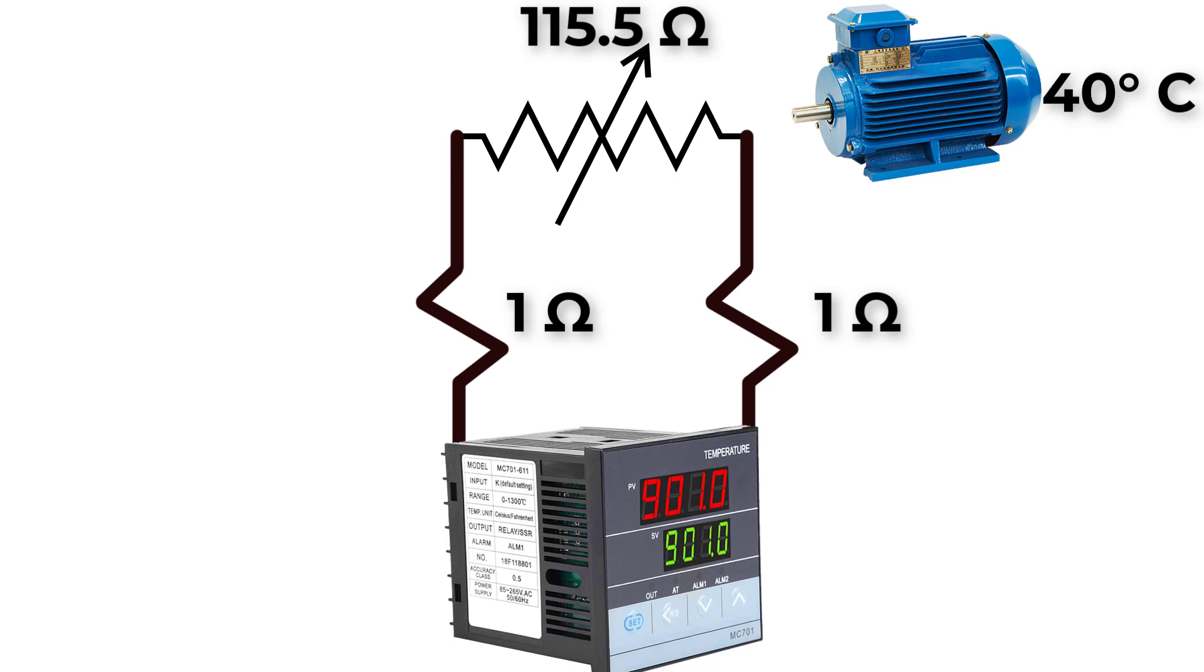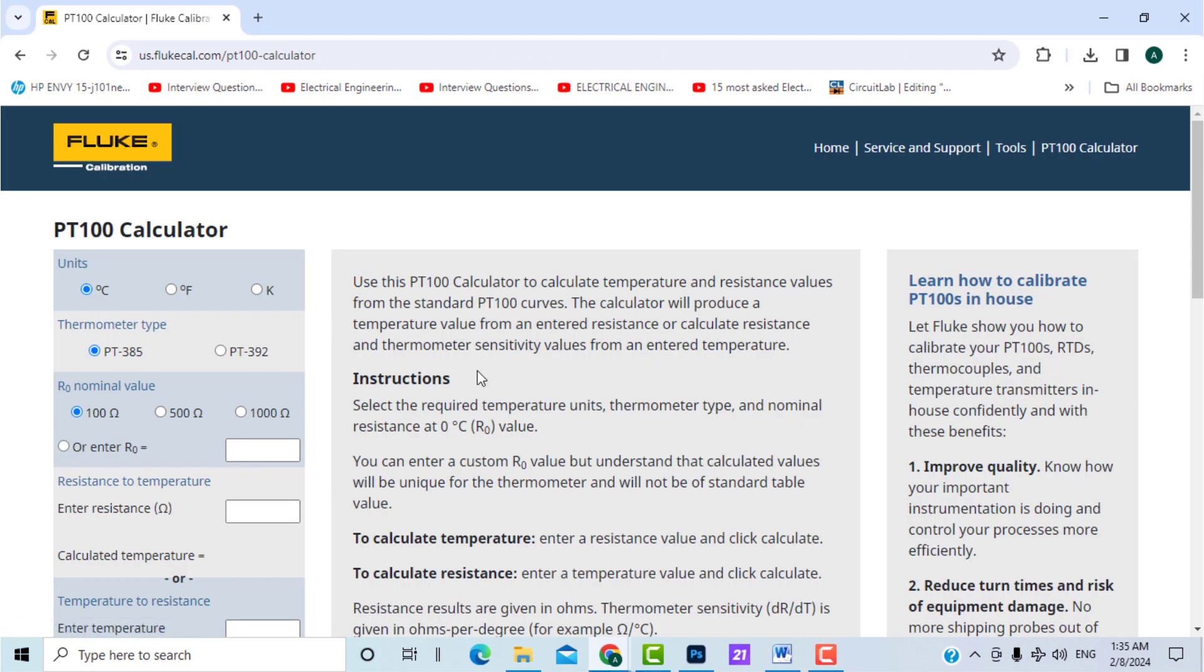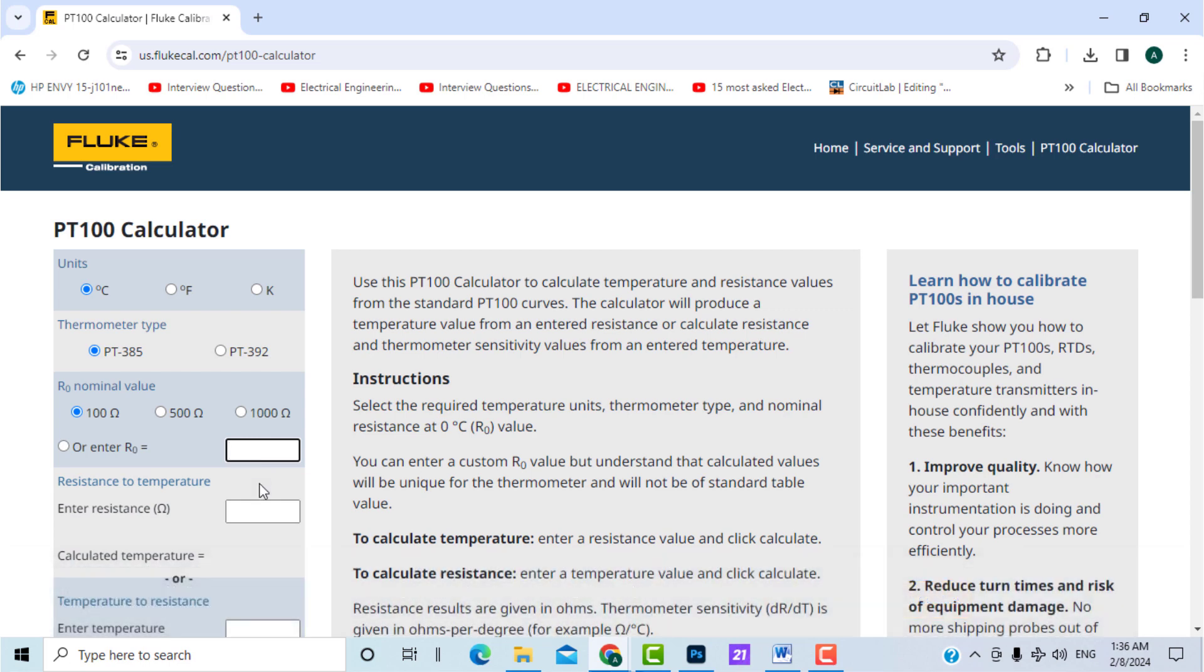Now, the temperature device will measure 115.5 ohm plus 1 ohm plus 1 ohm, which will equal 117.5 ohm. Returning to the table or online calculator, 117.5 ohm means that the temperature is 45 degrees Celsius.